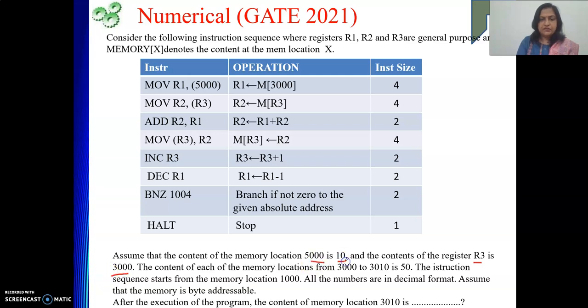What is given? Assume that the content of the memory location 5000 is 10 and the contents of the register R3 is 3000. These two data are given: 5000 is holding 10, R3 is holding 3000. Content of each of the memory locations from 3000 to 3010 is 50. Total how many locations? 3000 to 3010, everyone will be holding 50.